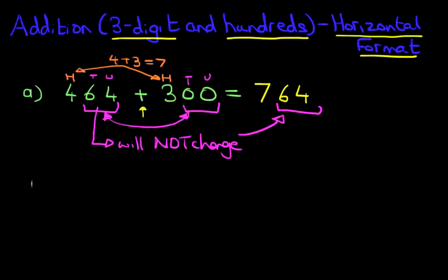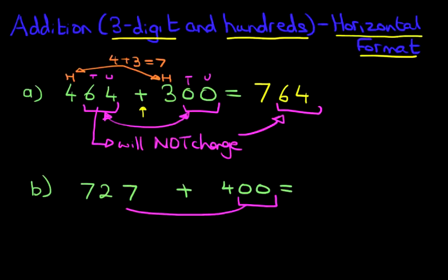Okay, let's move to our second example. This time, we've got a slightly tricky one, 727 plus 400. Now again, the same principle applies. 0, 0, and we're adding it to 27. So the 27 does not change.